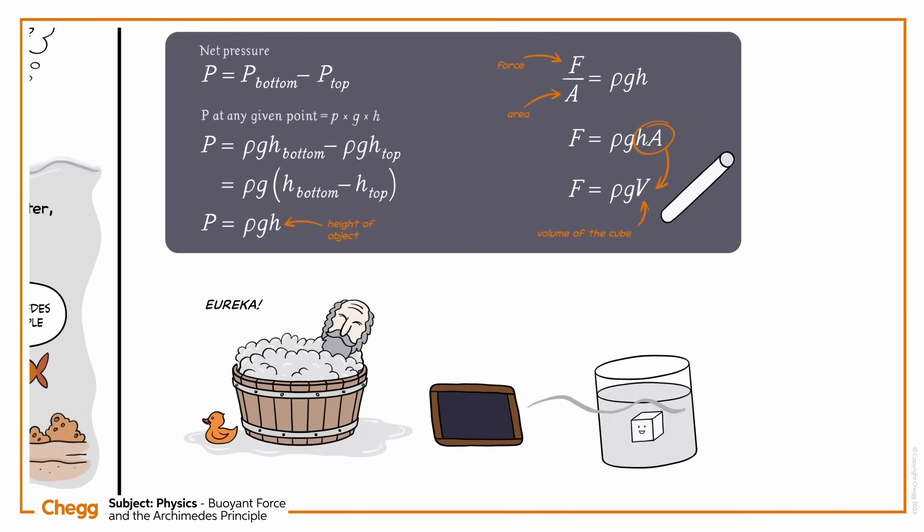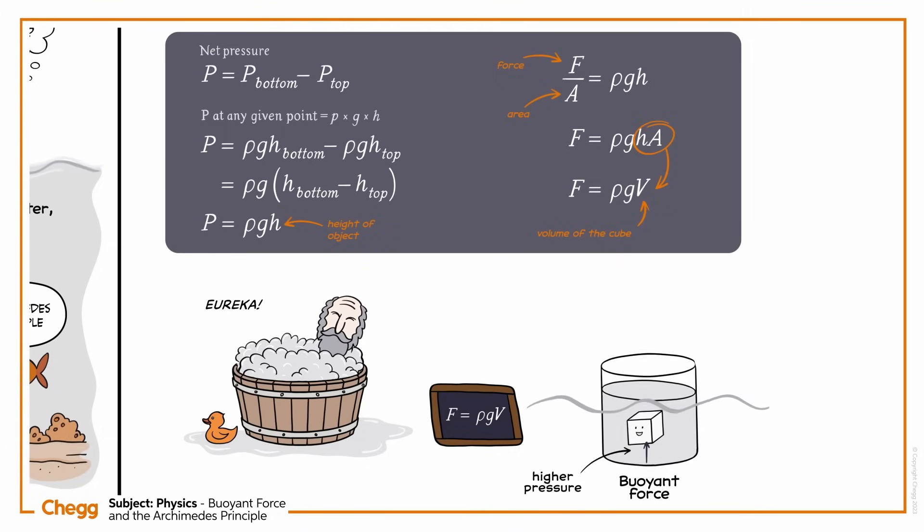So the net upward force F acting on the object can be calculated as the product of the fluid density rho, gravitational acceleration, and volume of fluid displaced. We call this force the buoyant force. It's caused by the pressure on the bottom of an object being higher than the pressure at the top, and it's the reason why we feel weightless underwater.